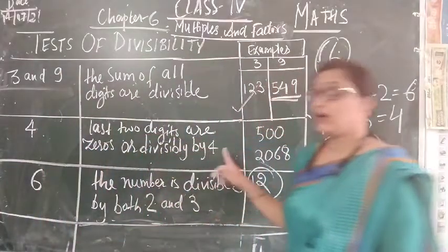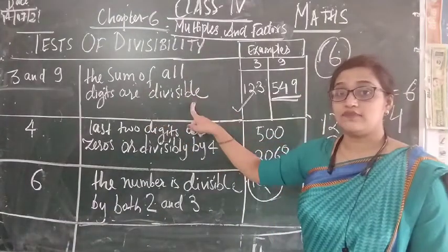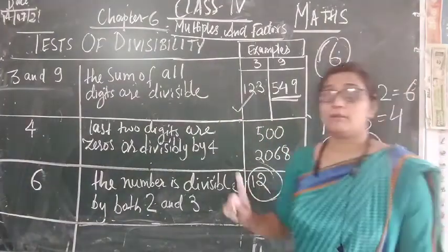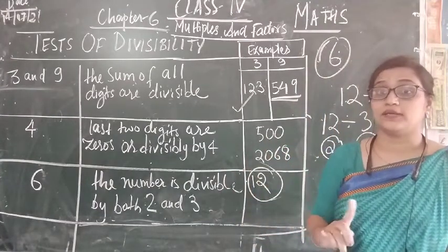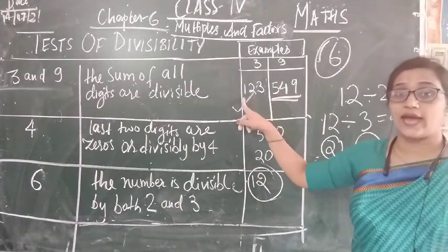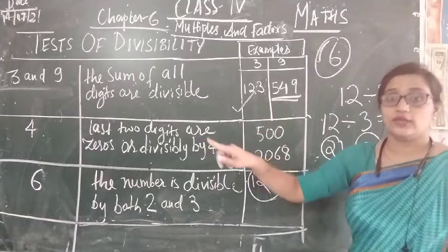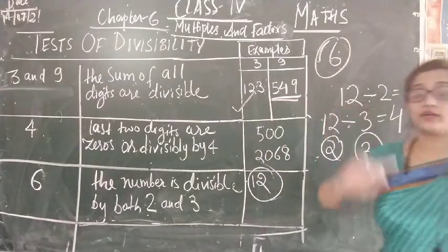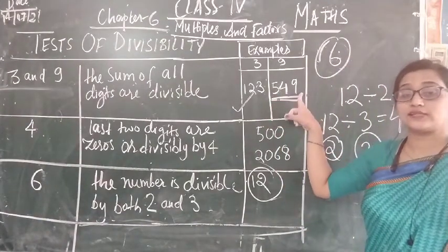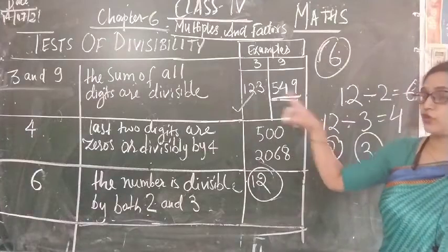Let us have a recap. For the test of 3 and 9: the sum of all the digits should be divisible by 3 or 9 respectively. For 3, we took example 123 — when we add 1 + 2 + 3 we get 6, and 6 is divisible by 3. Same with 9 — we took example 549 — 5 + 4 = 9, and 9 + 9 = 18, which is divisible by 9. So these are the examples of tests of 3 and 9.